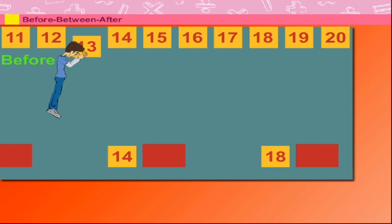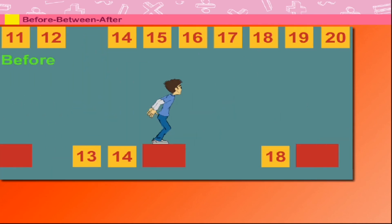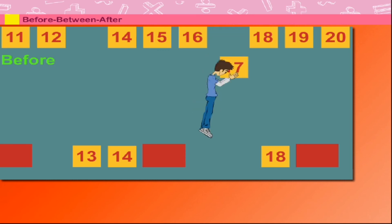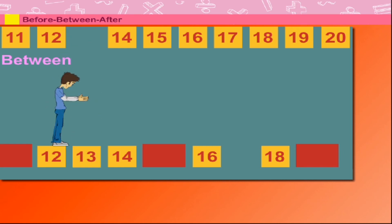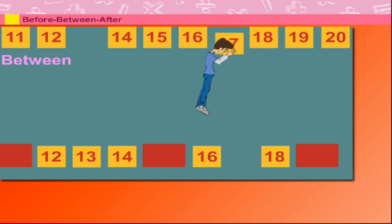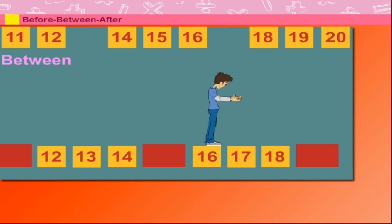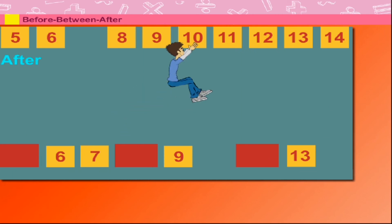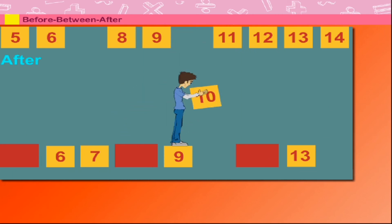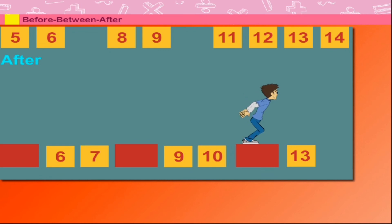It is 13. What comes before 18? Sammy pulls down 17. What comes between 12 and 14? Sammy pulls down 13. What comes between 16 and 18? It is 17. Here is 6. What comes after 6? It is 7. What comes after 9? It is 10.